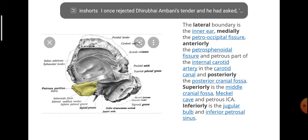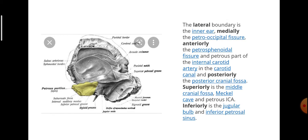The lateral boundary is the inner ear. Medially the petro-occipital fissure, anteriorly the petrosphenoidal fissure and petrous part of the internal carotid artery in the carotid canal, and posteriorly the posterior cranial fossa. Superiorly is the middle cranial fossa, Meckel's cave and petrous internal carotid artery. Inferiorly is the jugular bulb and inferior petrosal sinus.